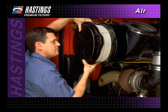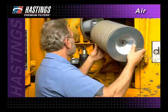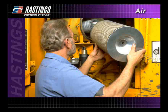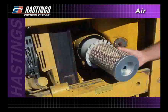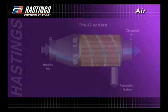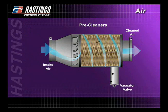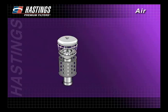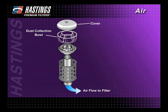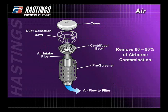Many heavy duty engine systems have only a primary or single stage filter. Others add a secondary element inside the primary filter. In many heavy duty applications, a separator or pre-cleaner is included. The pre-cleaner works to separate heavier particles from the air and can be designed as an integral part of the primary filter, as shown here. It can also be built in or attached to the filter housing. Pre-cleaners can remove 80 to 90 percent of airborne contamination before it reaches the filter.